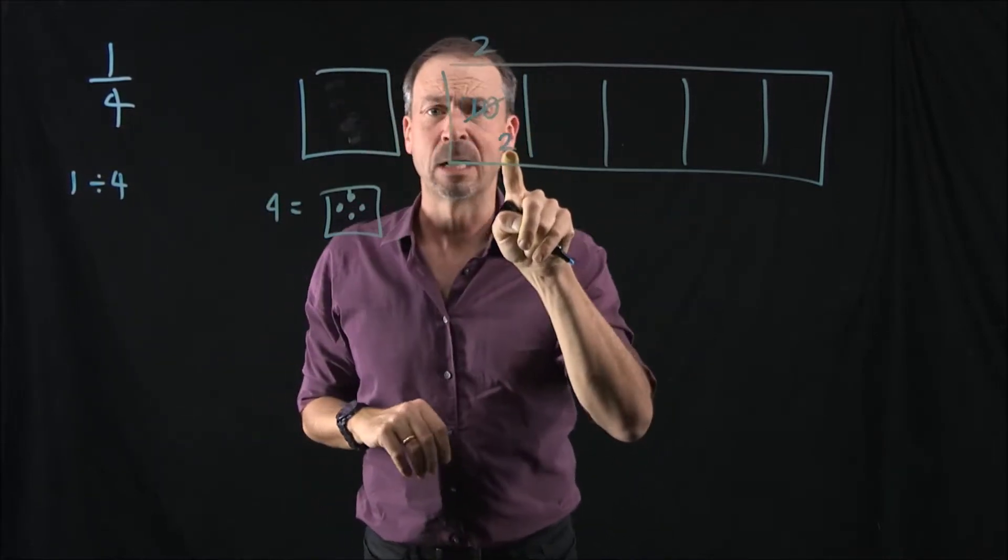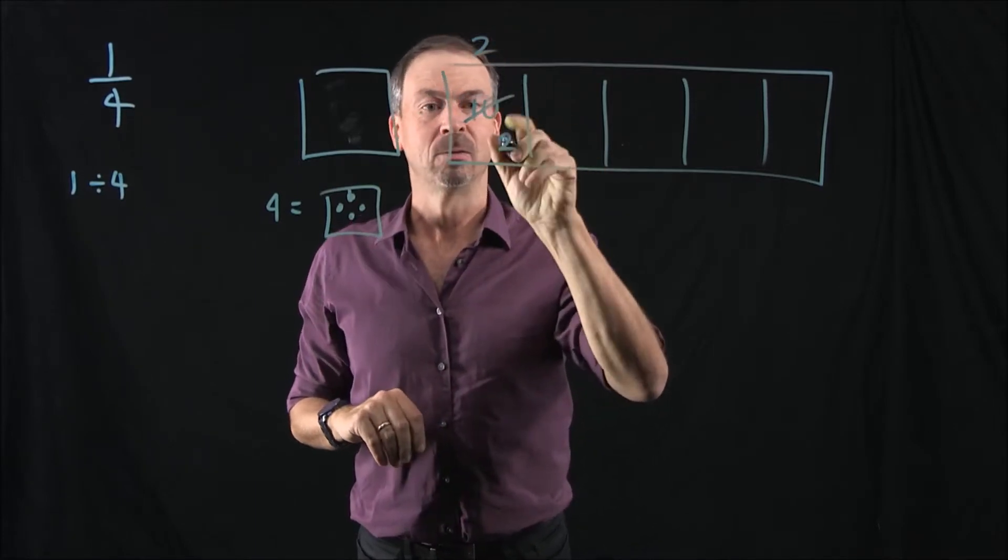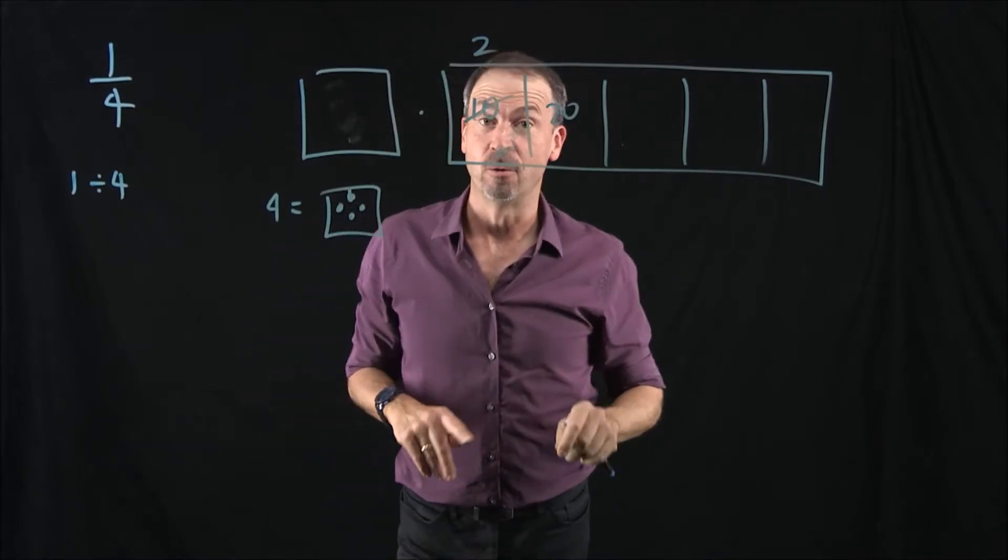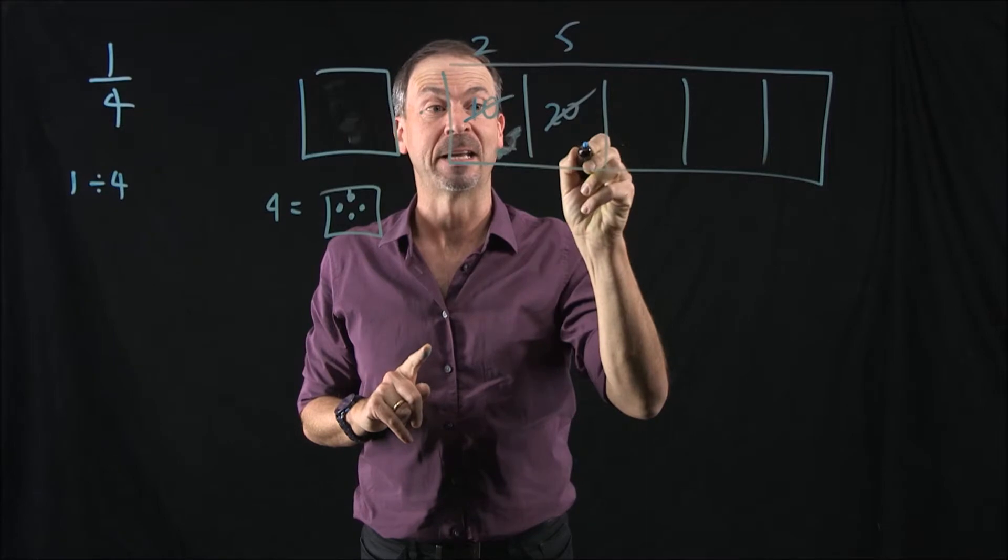Great. Now, those 2 dots there, what can I do with them? Well, I can unexplode them. And that would make 20 dots here. Do I see any groups of 4 amongst those 20? You bet. I'll see 5 of them, and I believe that leaves none behind.